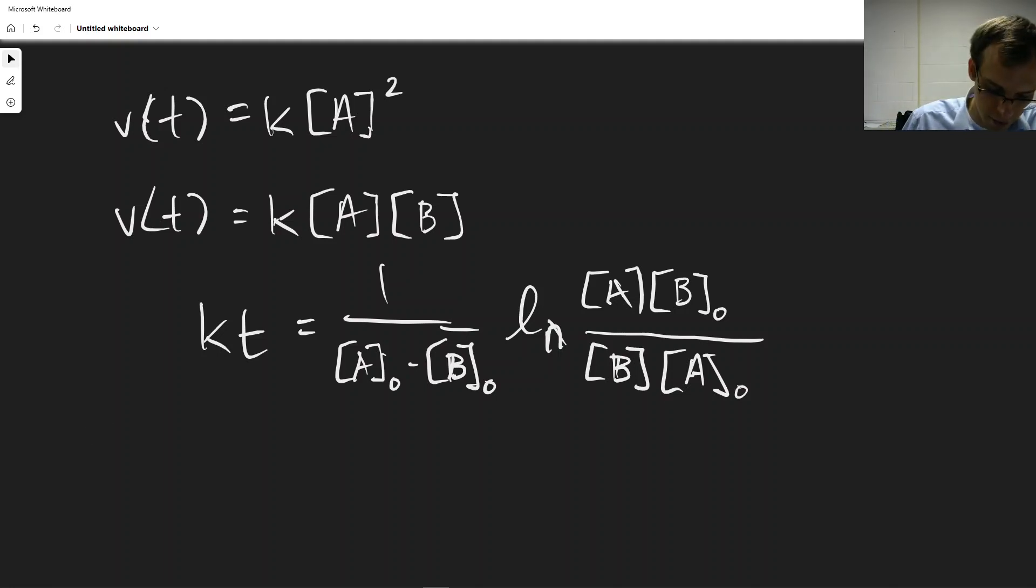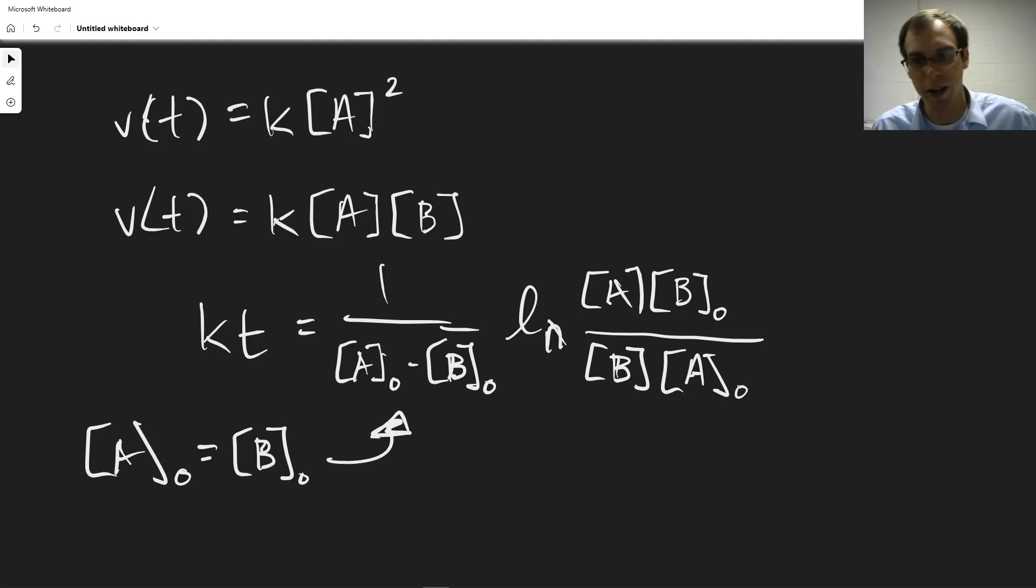And that is if we have equal concentrations of A and B to start with. So if [A]₀ is equal to [B]₀, this equation doesn't work because this denominator here goes to 0, and you divide by 0, and that's undefined.